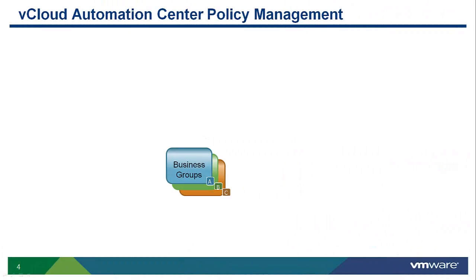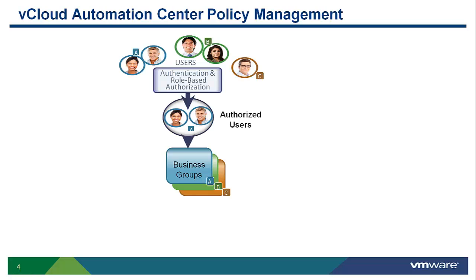The vCloud Automation Center has three primary policies used to implement user-centric, business-aware cloud management. The first is business groups. The vCloud Automation Center allows administrators to define a multi-level grouping structure and associate users from Active Directory with one or more groups and have specific role-based access within those groups.